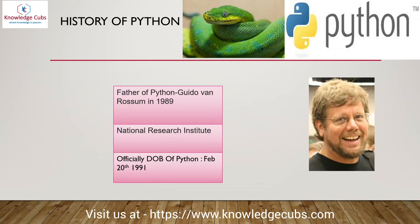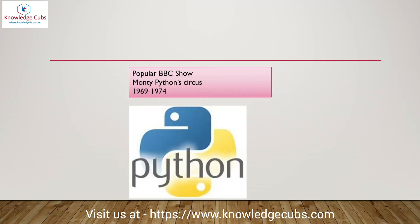Coming to the history of Python — Python was invented by Guido van Rossum in 1989 at the National Research Institute. During his research, he developed the Python programming language, but it was officially made available on 20th February 1991. There is also an interesting story regarding the naming of Python — it was named after a famous comedy show.